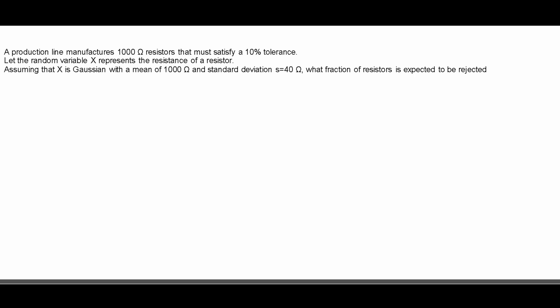A production line manufactures 1,000 resistors and it must satisfy a 10% tolerance. So let's start writing this out. We know that we have 1,000 resistors that we need to manufacture.